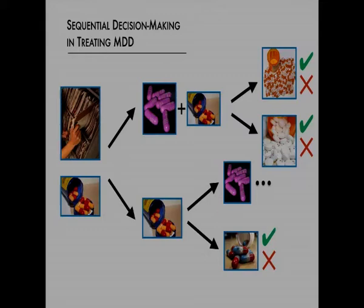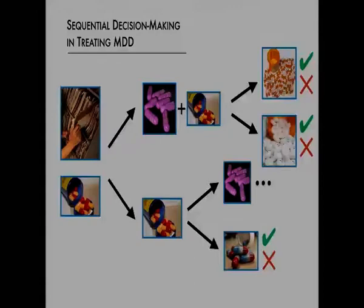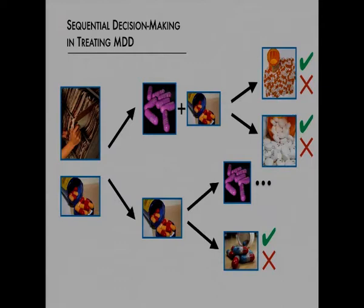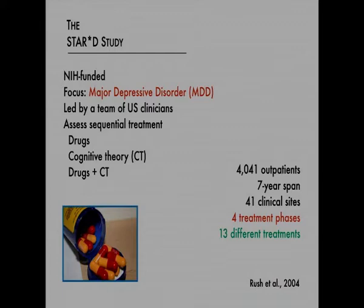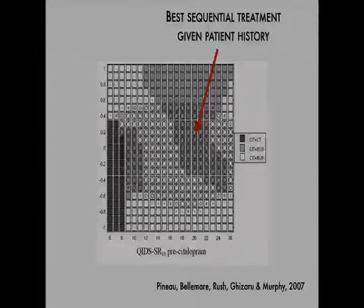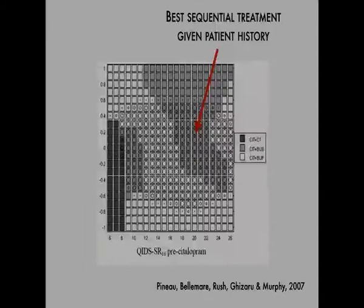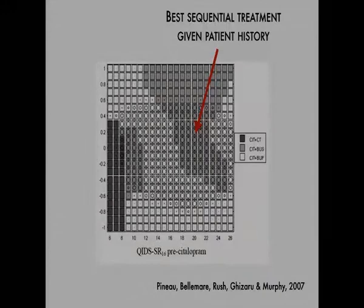We could use a one-shot approach for this problem, except we'd have to treat every possible sequence of decisions as an individual input to the network. That's quite costly — with 13 treatments and four stages, you have 13 to the fourth possible sequences. With 4,000 patients, you won't have enough data to assess all these outcomes. Even this large study had 4,000 patients, which was still a very small number when it came to evaluating all possible sequences.